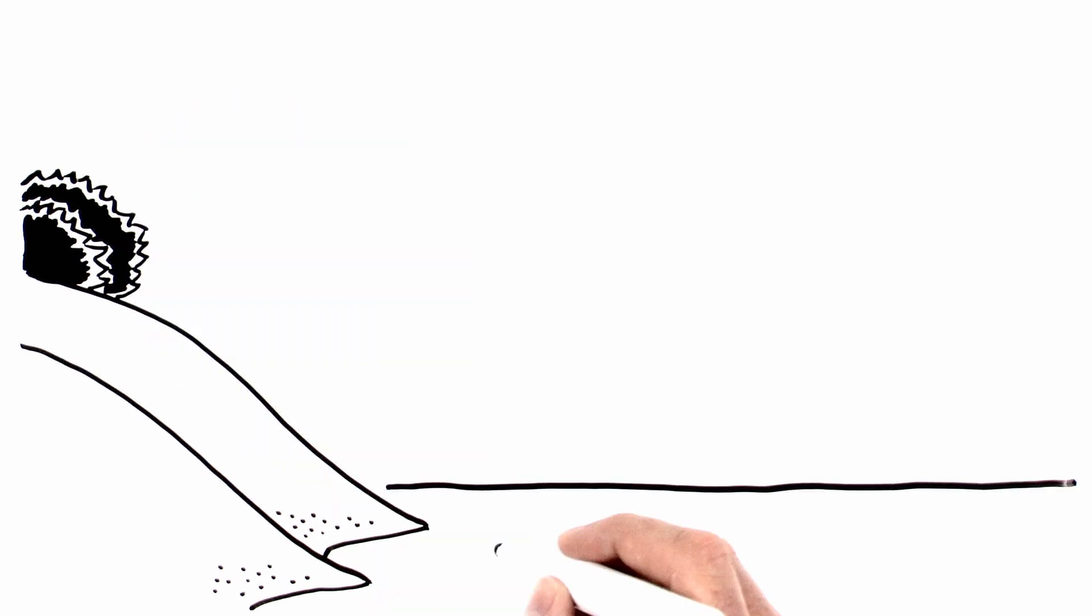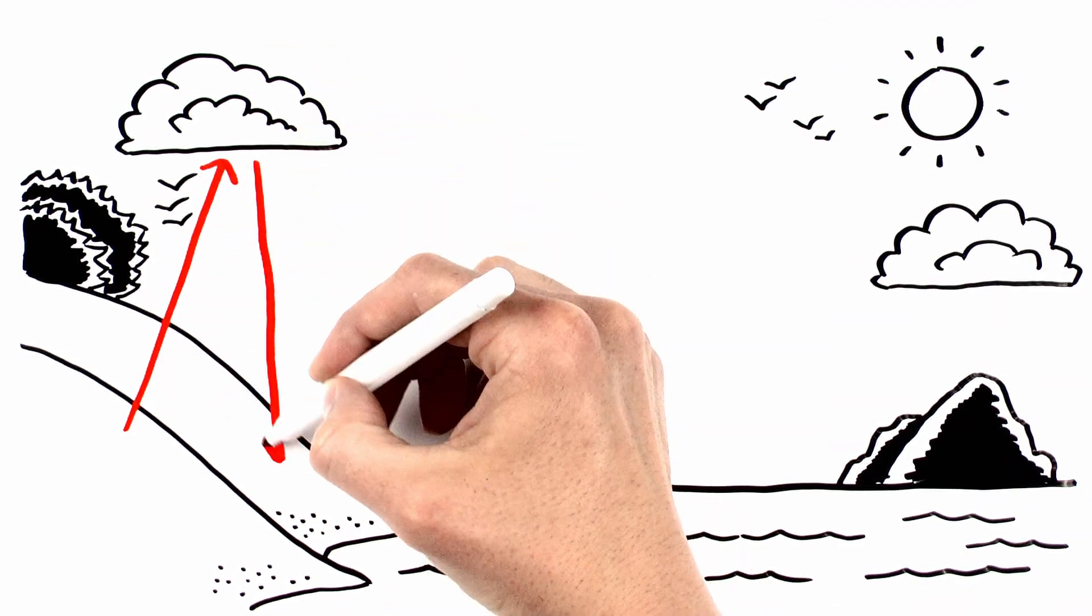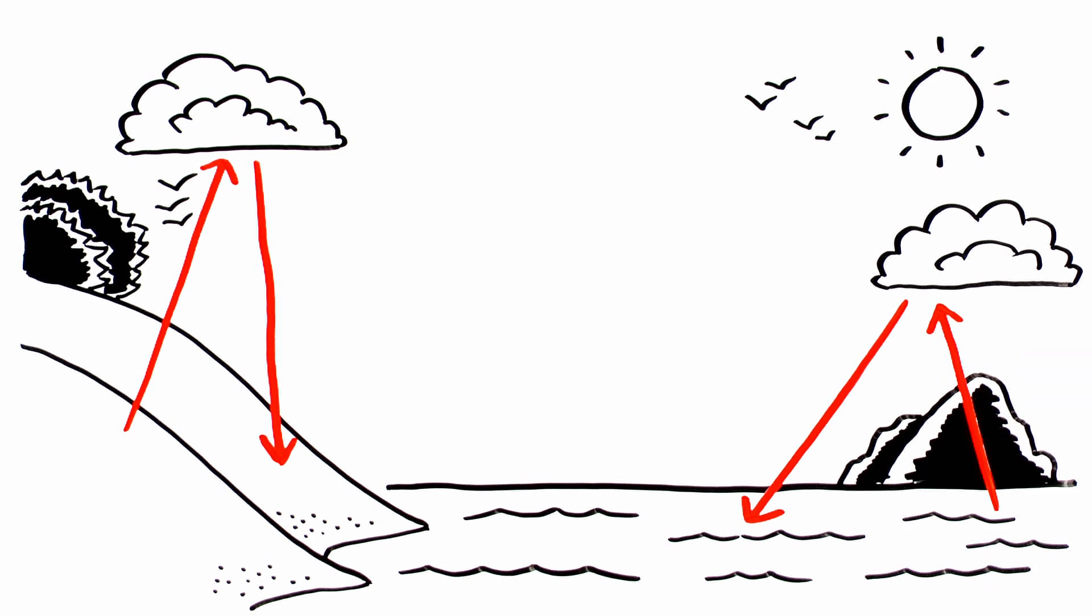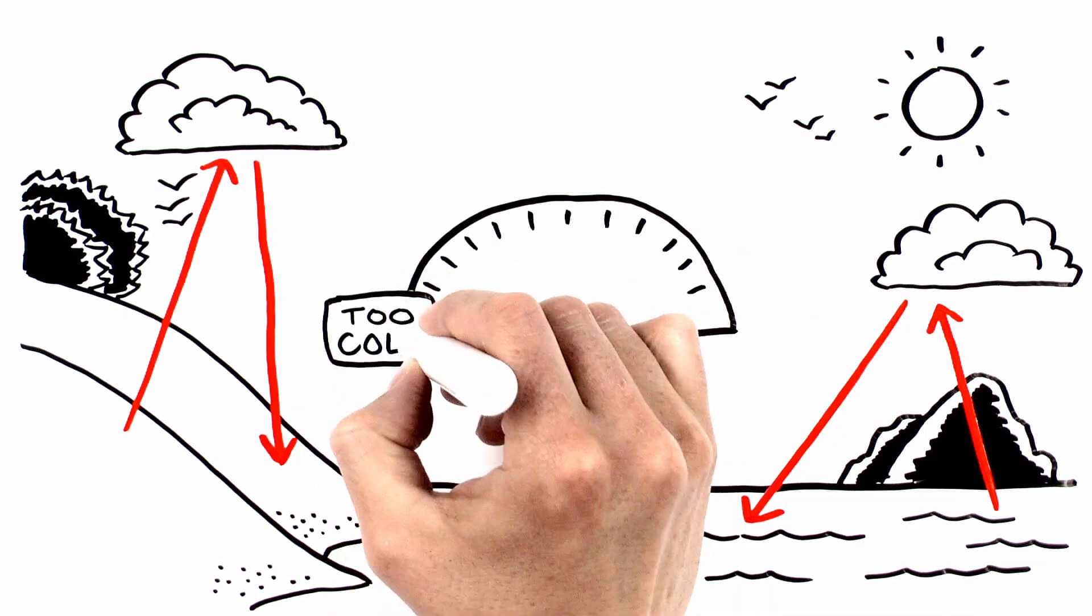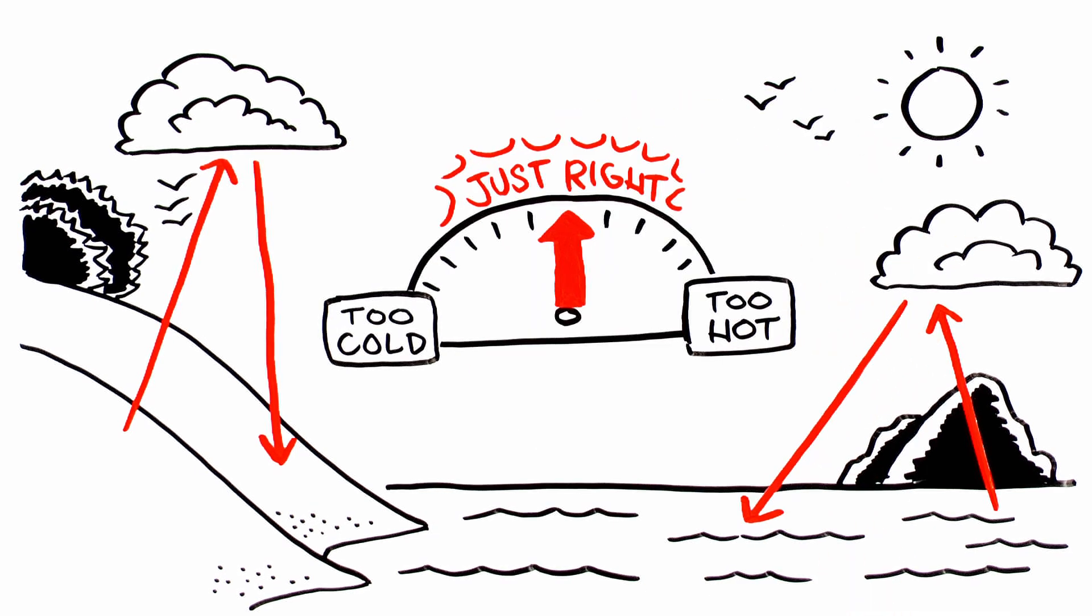These greenhouse gases, mainly water vapor and carbon dioxide, naturally cycle between the land and atmosphere and ocean. And over the ages, these greenhouse gases have reached a delicate balance that results in temperatures that we like, a lot.